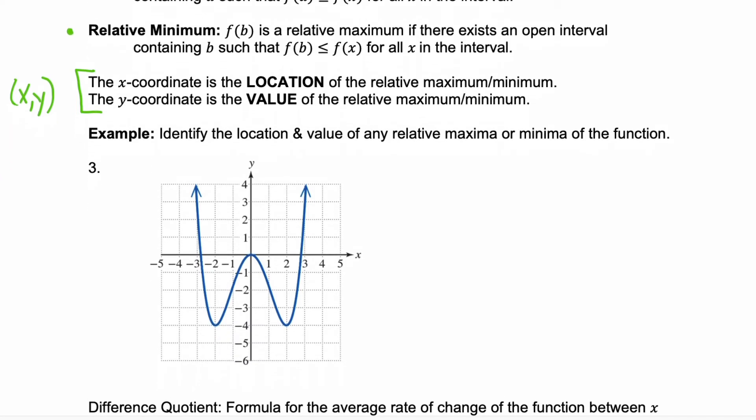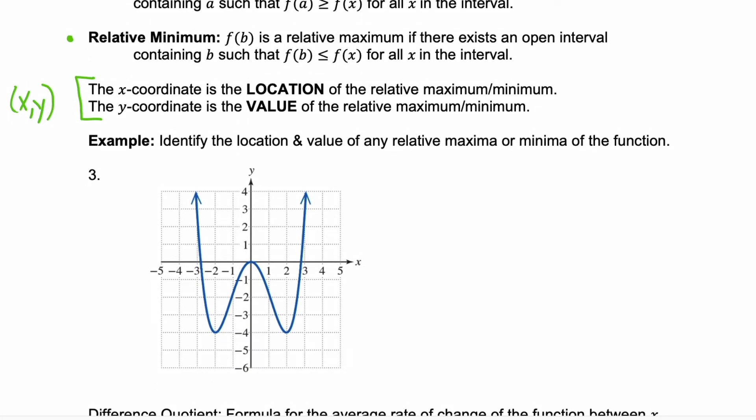Let's look at this example number three. We're going to identify the location and the value of any relative maxima or minima of the function. So let's look at maxima first. Maxima is when we transition from increasing to decreasing. So this point here, which is the point (0, 0) is a maxima. Remember that the x coordinate tells you the location and the y coordinate tells you the value. So here we would say we have a relative maxima of 0 at x equals 0. This one's a little tricky because we have the origin as our maxima.